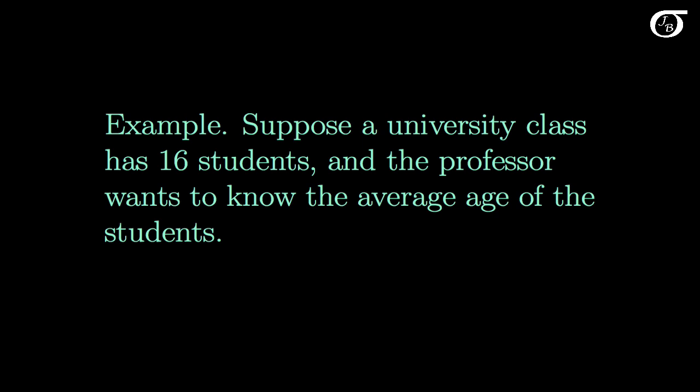Let's look at a simple example to illustrate. Suppose a university class has 16 students, and the professor wants to know the average age of the 16 students in the class. Since the professor is interested in these specific 16 students, these 16 students represent the population of interest, and their average age is a parameter, which I'm going to call mu. Perhaps the professor would have access to this information in their records, but I'm going to assume here that they do not, and so mu is an unknown quantity to the professor.